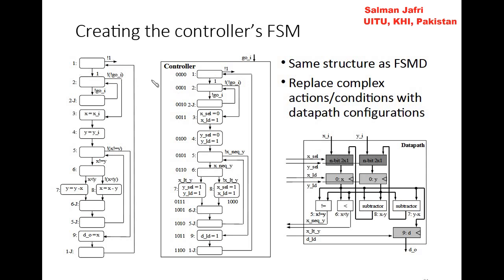For example, the first state becomes 0000. From state 0000 we move to state 0001. If the condition 'not g0_i' is true, we go from state 0001 to 0010, and from 0010 we move back to 0001 to check the condition again. If the condition is false, we move from state 0001 to state 0011, which is the binary equivalent of state 3.